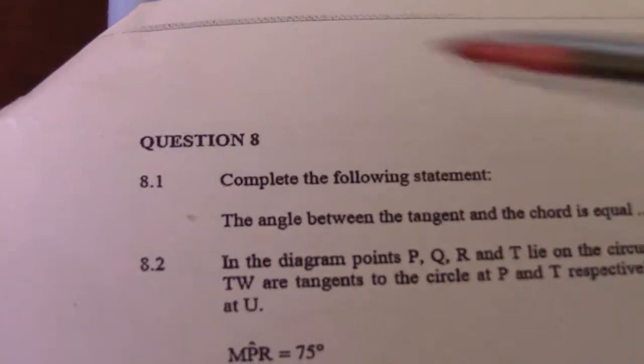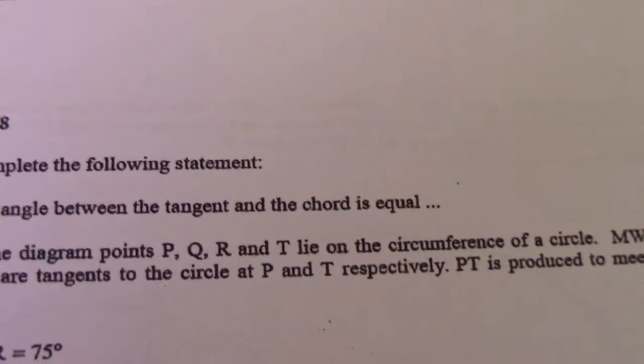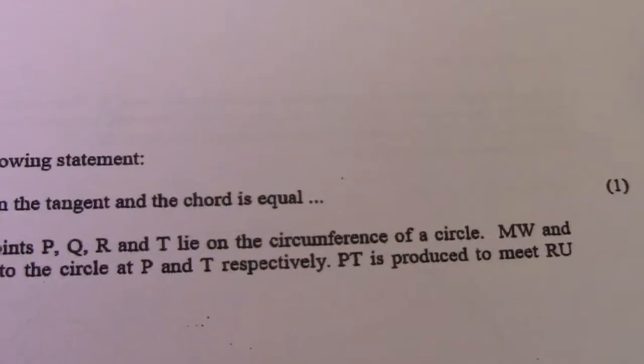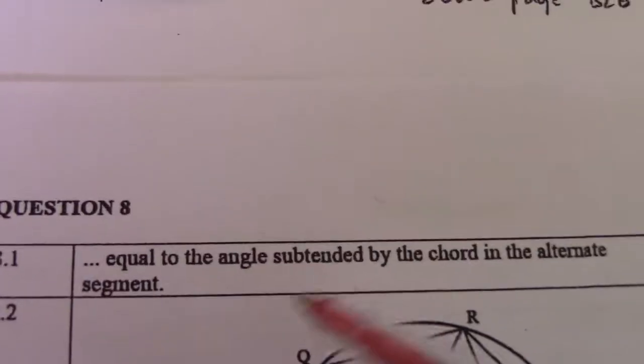Alright, Euclidean Geometry compilation, question 8. The angle between a tangent and a chord is equal to the angle subtended by the chord in the alternate segment. Tangent-chord theorem.